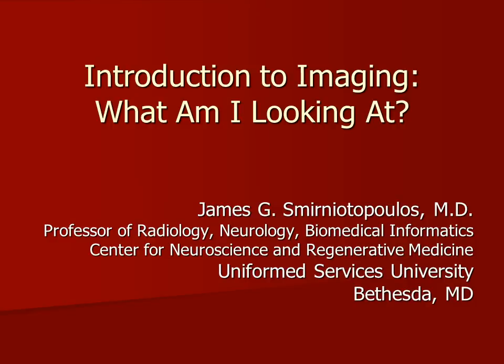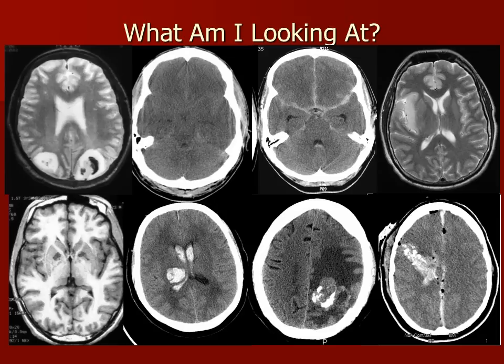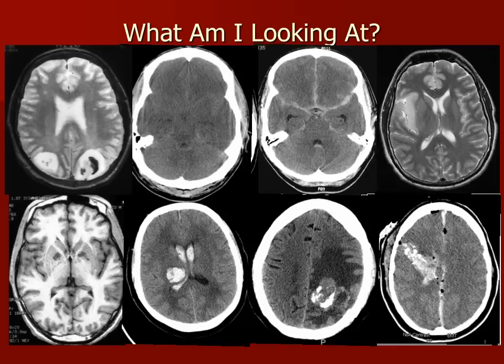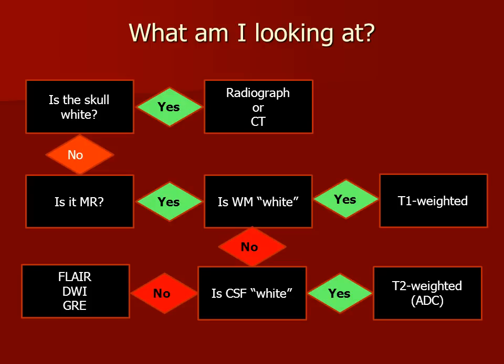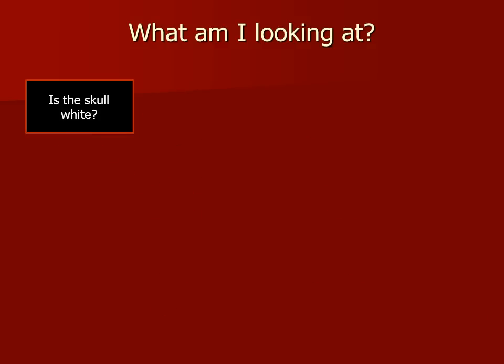Today we're going to present a simple way to decide what am I looking at. It can be very confusing when you first start looking at neuroimages. Some people use pattern recognition, understanding immediately that these are all CT scans and these are MRI. However, you can also use an algorithm to sort through the different shades of gray that we see on CT and various MR pulse sequences. Let's see if we can make this algorithm work for us.